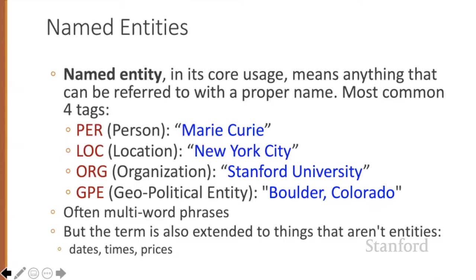A named entity is, roughly speaking, anything that can be referred to with a proper name. Four entity tags are most common: person, location, organization, or geopolitical entity. However, the term named entity is commonly extended to include things that aren't entities per se, including dates, times, other kinds of temporal expressions, and even numeric expressions like prices.